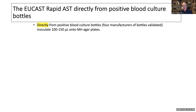The EUCAST rapid AST development started approximately five years ago. Various approaches were tried, including subculturing bottles for one or four hours, harvesting bacteria, spinning, and resuspending to achieve a 0.5 McFarland inoculum. All of those approaches delayed reading of the AST — shocking the bacteria by spinning increased their lag phase, making it impossible to read results after four hours. Eventually, a method was developed where the blood culture broth — bacteria and broth directly from the bottle — is inoculated onto Mueller-Hinton or Mueller-Hinton F plates.